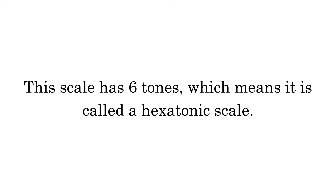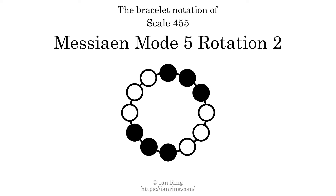This scale has 6 tones, which means it is called a hexatonic scale. This is a bracelet notation diagram of scale 455. The shaded circles represent tones that appear in the scale, and they are read clockwise, starting at the top.